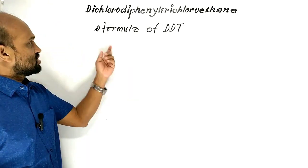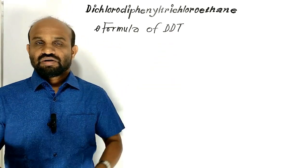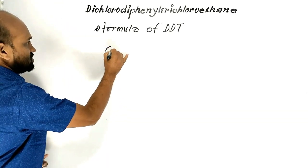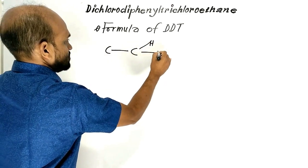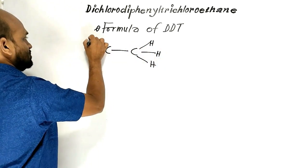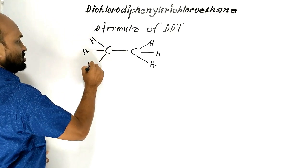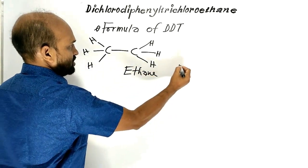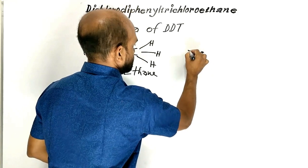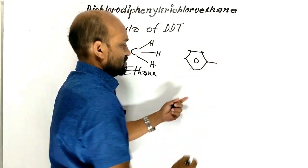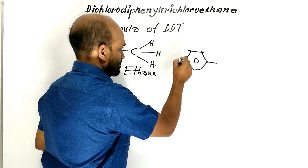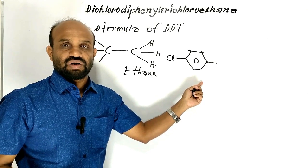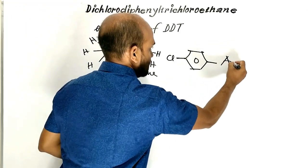First point is the formula of DDT. Let's see the formula of DDT. This is the ethyl group, and this one is the phenyl group. Here chlorine is added, making it the chlorophenyl group — a kind of aryl group.